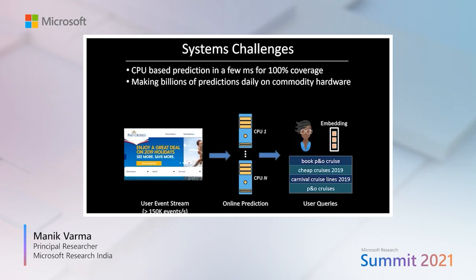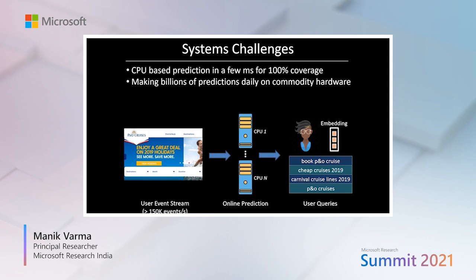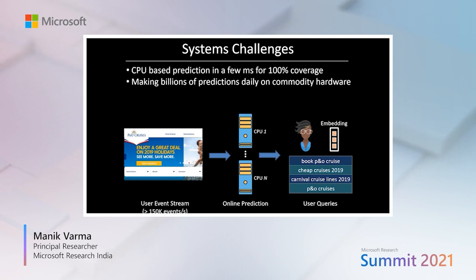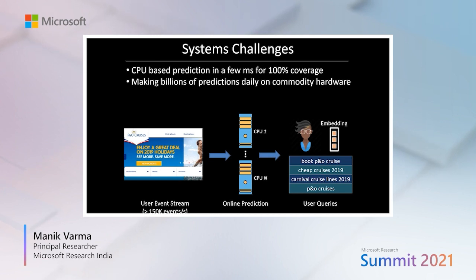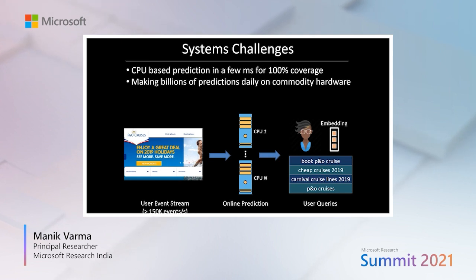We also had to tackle many systems challenges in order to deploy our solution at web scale. In particular, we needed to make more than a billion predictions per day at a rate of 150,000 predictions per second. For contrast, our original calculation was that a single prediction would take more than 10 days. We wanted to first do this using CPUs we had lying around spare rather than invest in dedicated FPGAs or GPUs, though we are also exploring those options now. And we wanted to achieve these low latencies and high throughputs without sacrificing accuracy — in fact, we wanted a significant lift in accuracy compared to all state-of-the-art personalization techniques running in production at Microsoft.